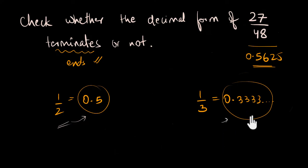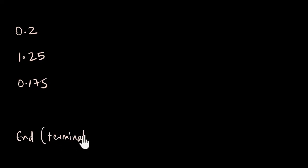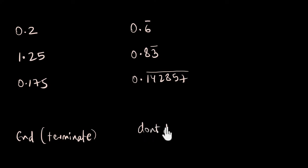To solve this mystery, we need a few more examples. Let me write some decimals that end: 0.2 ends, 1.25 ends, and 0.175 ends — these are terminating decimals. Now let me write a few that don't end: 0.6 repeating, 0.83 bar, and 0.142857 repeating. These are non-terminating decimals.